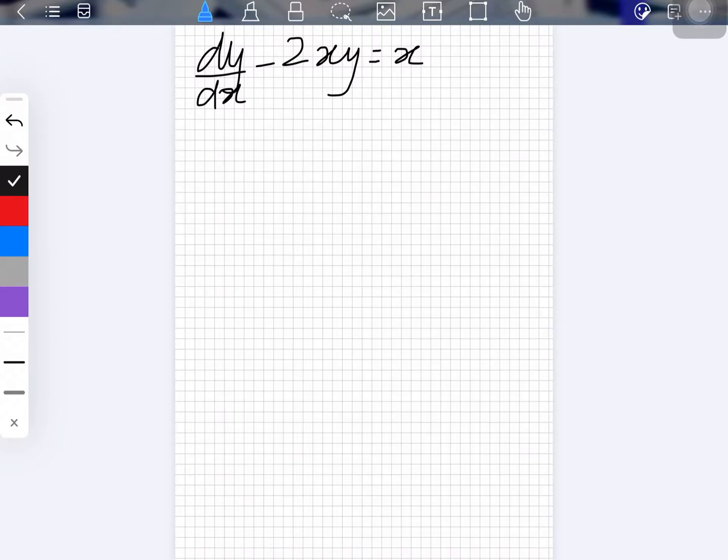So the standard form is dy/dx plus py equals qx. There is only a sign difference over here, else it's in the standard form. So what we can do is write dy/dx plus (-2x)y equals x. So now it is in the standard form. This way we can assume this to be p and x to be q. We don't necessarily need it, but it's easier if we do so.